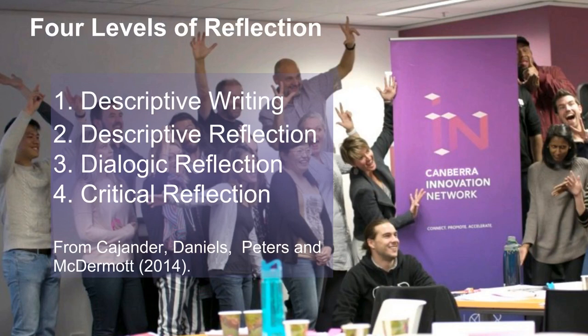Four levels of reflection. Kajunda, Daniels, Peters and McDermott describe four levels of reflection. Descriptive writing: the student simply describes experience without significant attempts at analysis. Descriptive reflection: the student attempts to provide reasons for their learning experiences based upon quasi-reflective personal judgments. Dialogic reflection: the student enters into a personal discourse to explore possible reasons for observed outcomes. Critical reflection: elaboration of reasons for personal learning decisions and experiences.